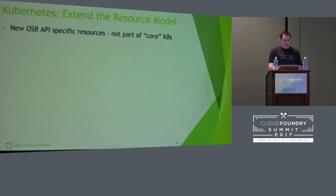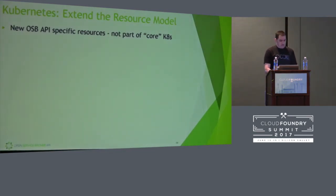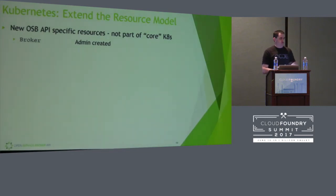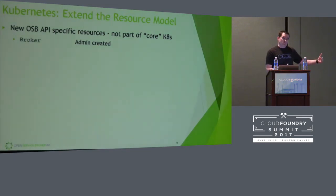In order for Kubernetes to support a service broker, we had to add some new resources to the data model. We decided not to extend the core Kubernetes model itself — it's an add-on feature — partly because we weren't 100% sure we wanted to pull it into the core yet, and also because they wanted to use us as a guinea pig for some newer extension features. You can create a broker resource in Kubernetes, which is nothing more than metadata about where the broker lives — its URL, user ID, and password. Once this resource is created by an admin, a controller will detect it, talk to the broker, get the catalog, and populate the Kubernetes resource model with that catalog.